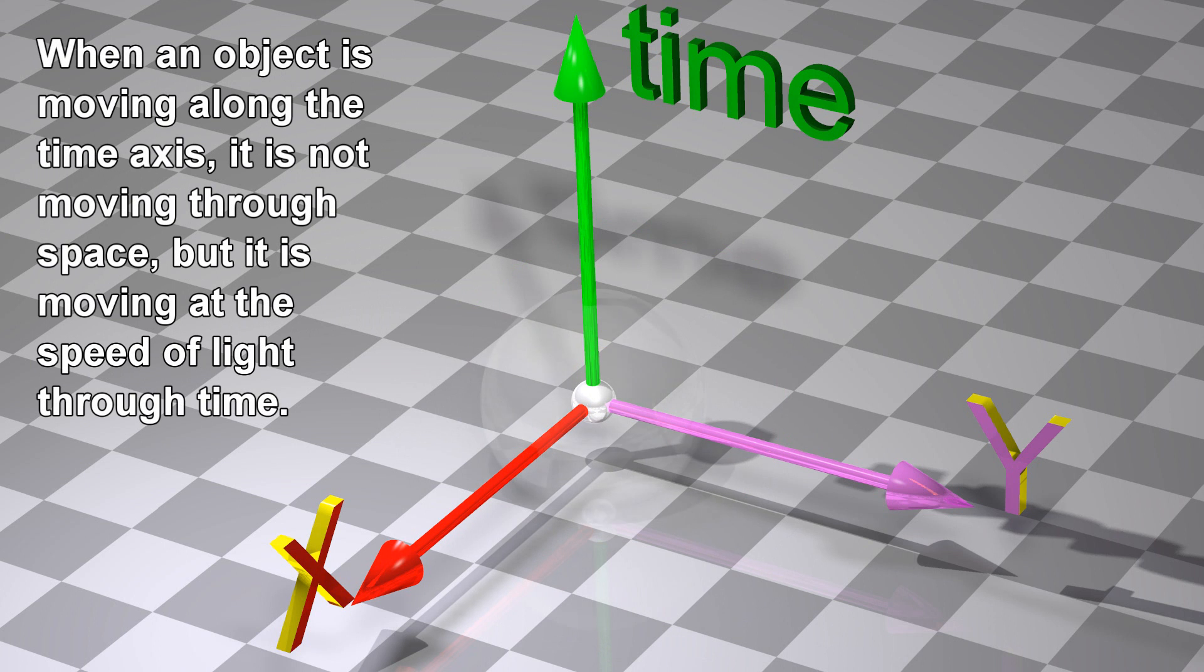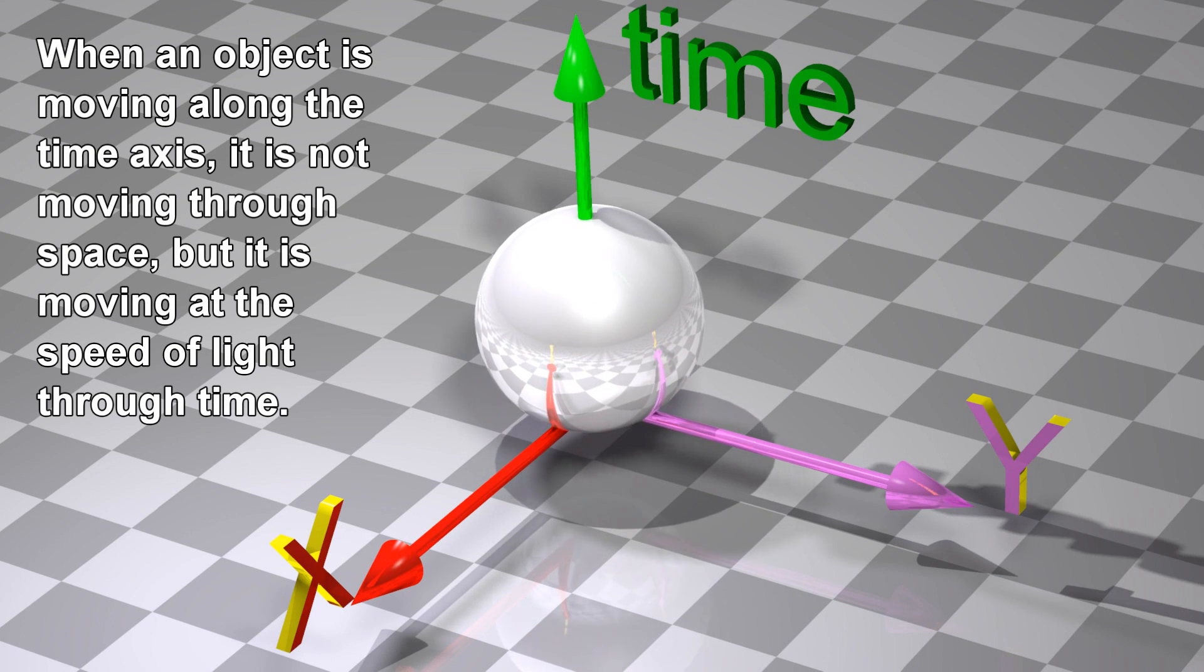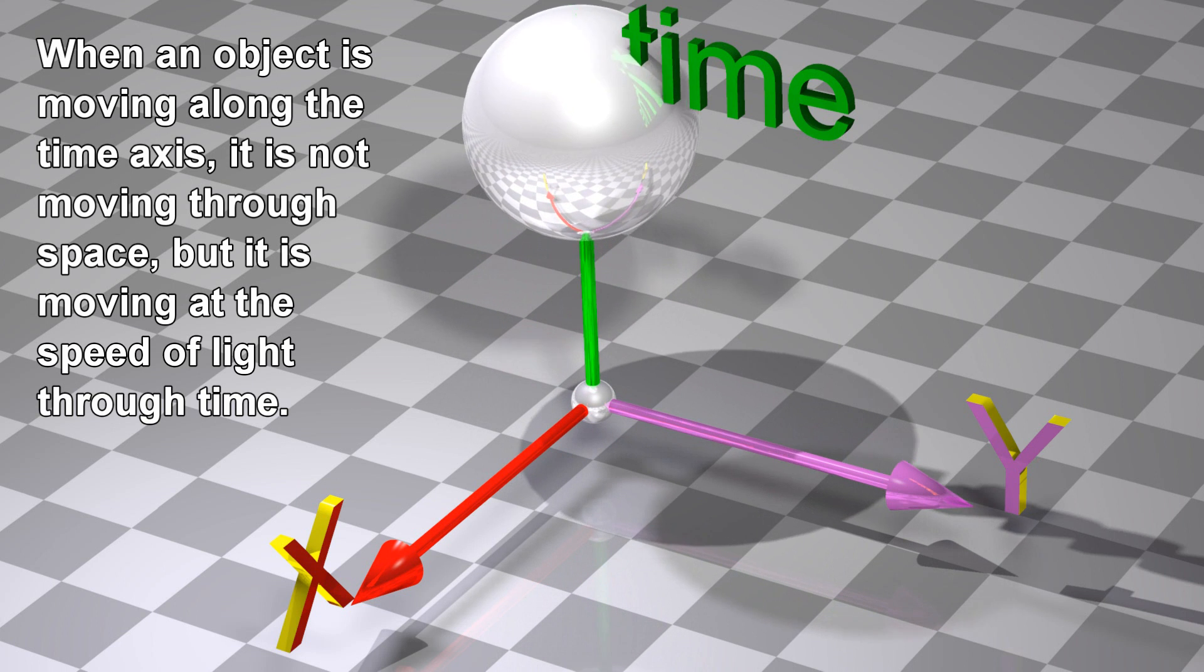When an object is moving along the time axis, it is not moving through space, but it is moving at the speed of light through time.